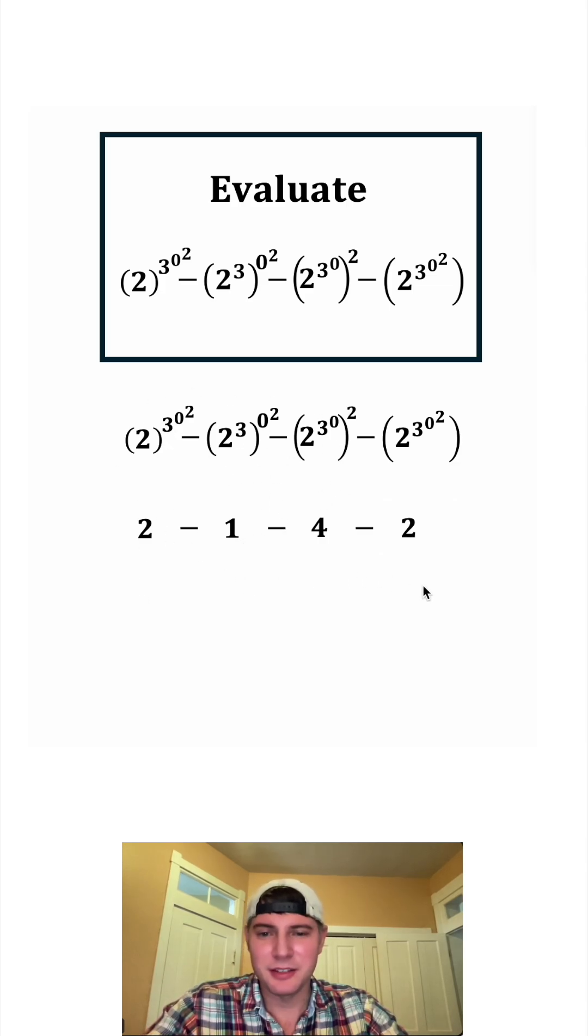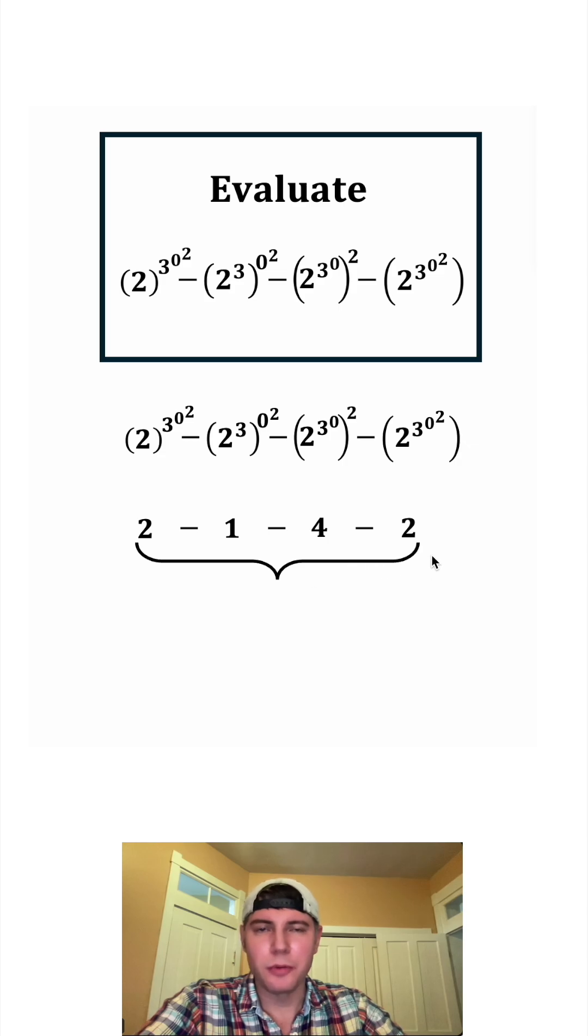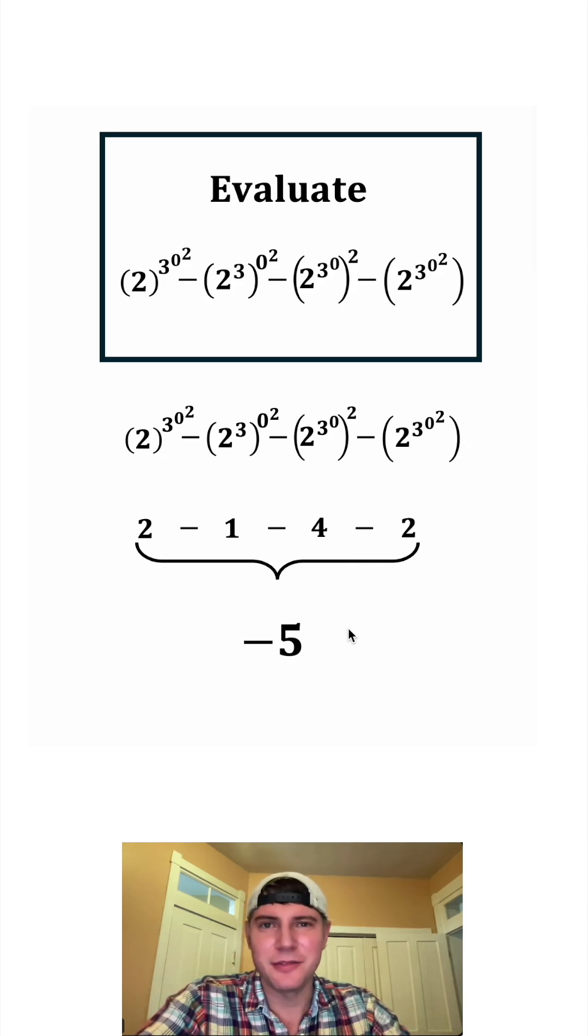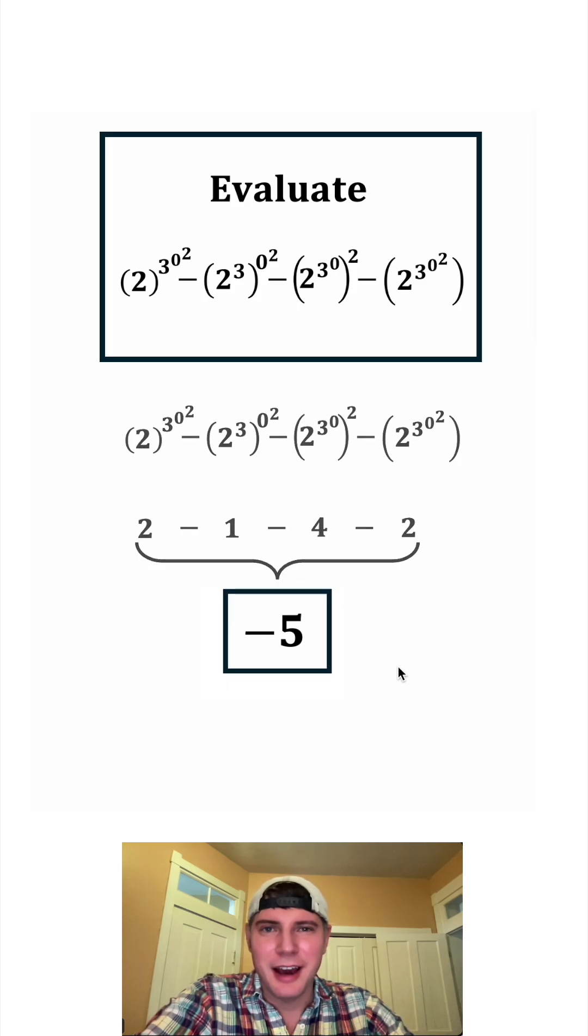And now we just simplify this. Two minus one minus four minus two is equal to negative five. And this is the answer to our question. Let's put a box around it. How exciting.